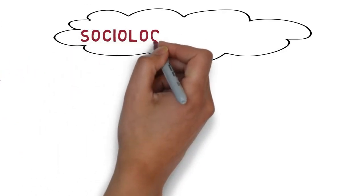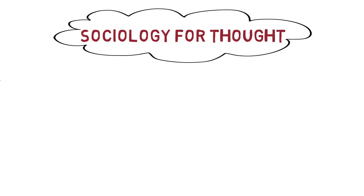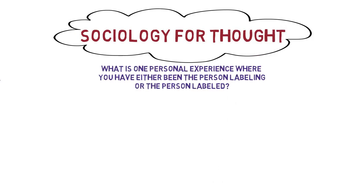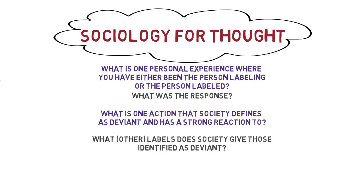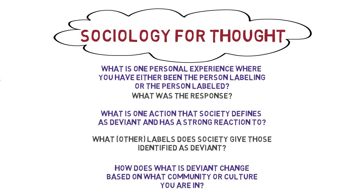What is one personal experience where you have either been the person labeling or the person labeled because an action was seen as deviant? How did the person respond to the label, or how did you respond? What is one action that society defines as deviant and has a strong reaction to? What labels does society give those that are labeled as deviant? And how does what is deviant change based on what community and culture you are in?